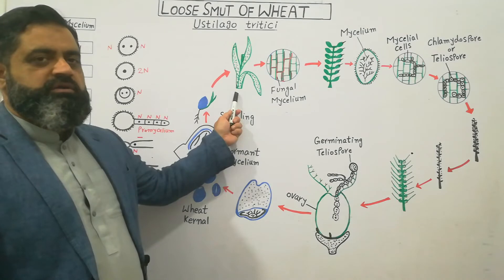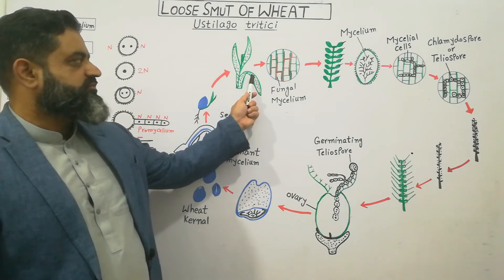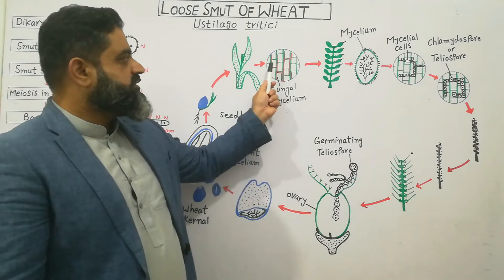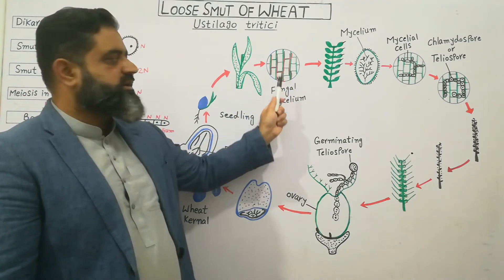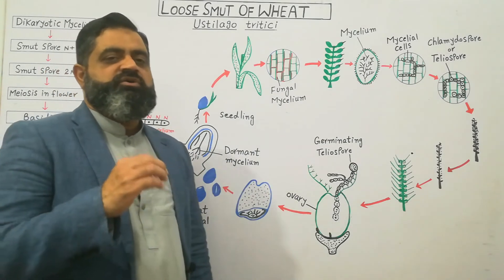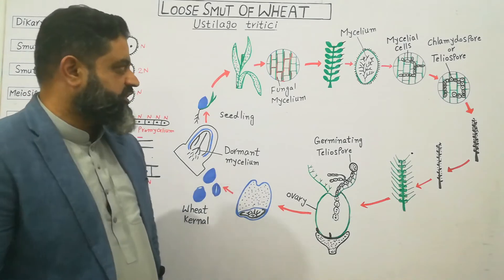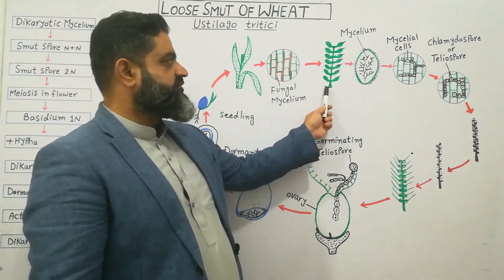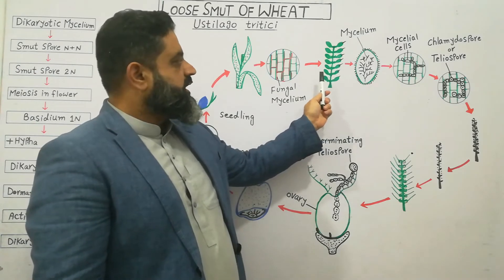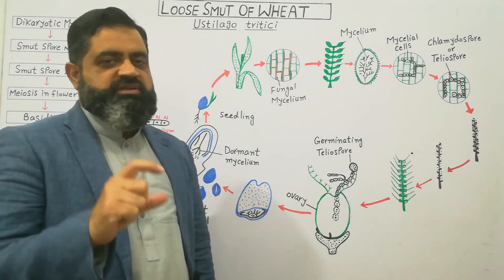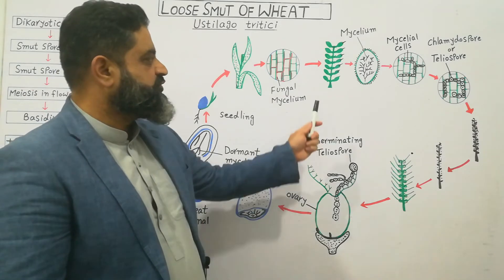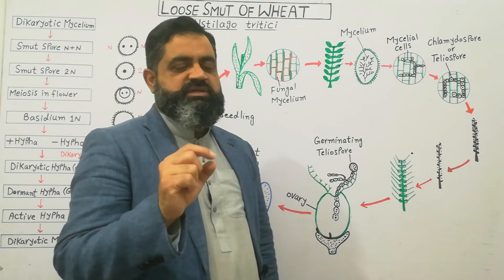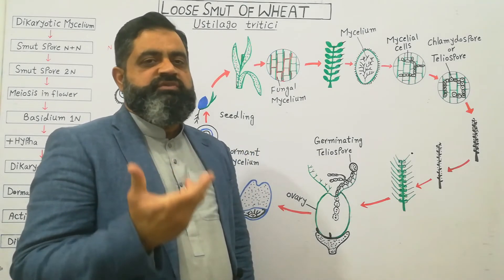When the seedling has become a plant, if we take a cross section from the surface of a leaf, as you can see in this diagram, the green colors represent the cells of the plant, and within these green cells you can see red lines — these red lines are the fungal mycelium or hyphae growing with the plant as it grows taller. In the months of March and April, wheat plants start producing flowers, and inside these ears of wheat the fungal mycelium is also growing. Taking a cross section from the kernel which is going to become a seed, we can see a large amount of fungal mycelium of Ustilago tritici.